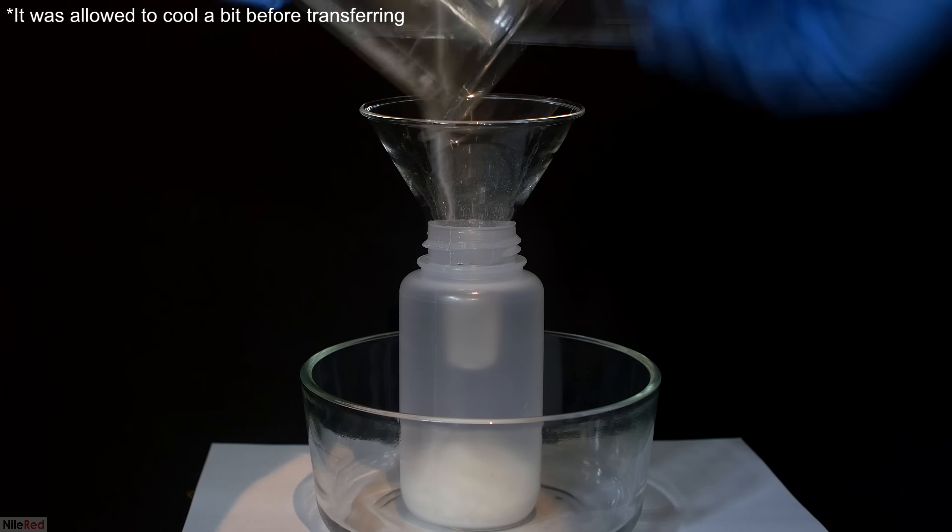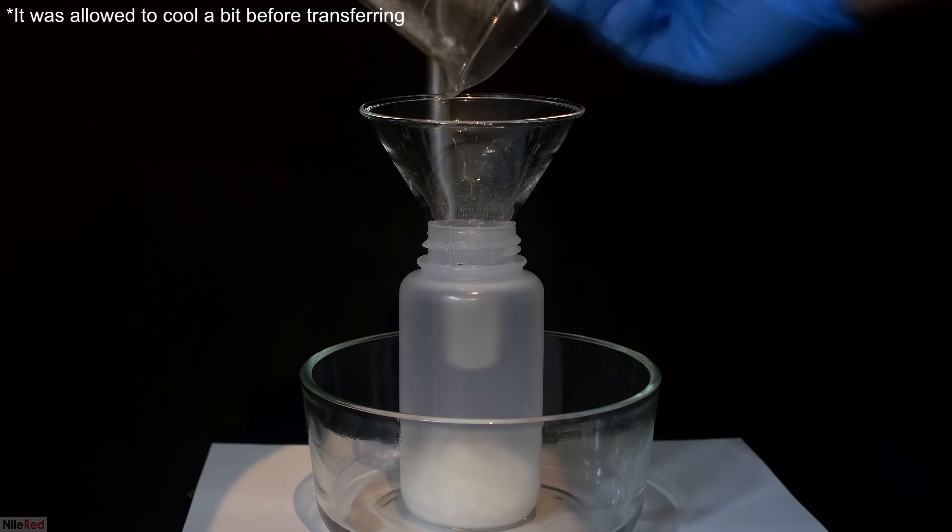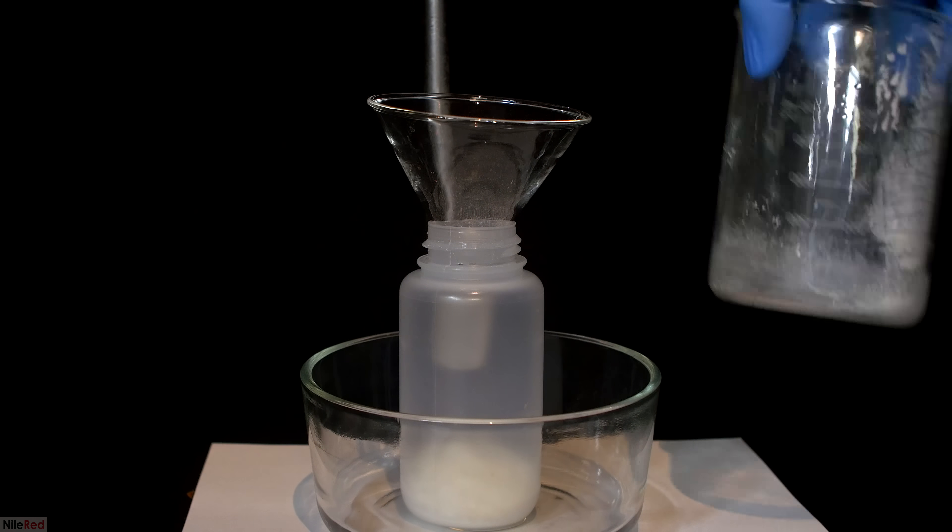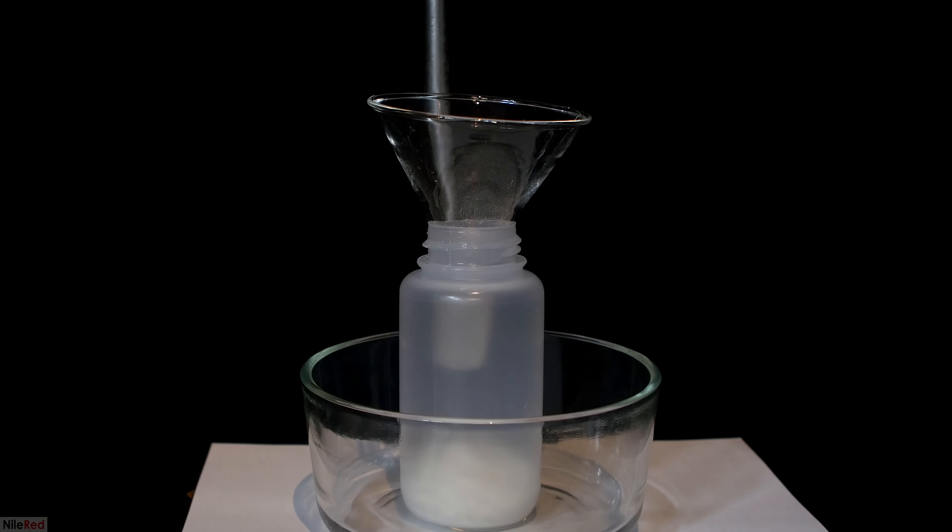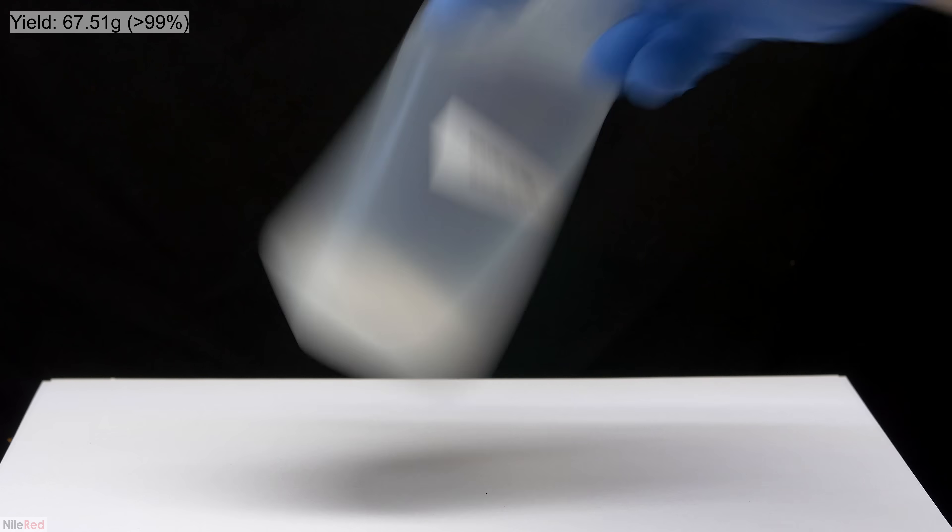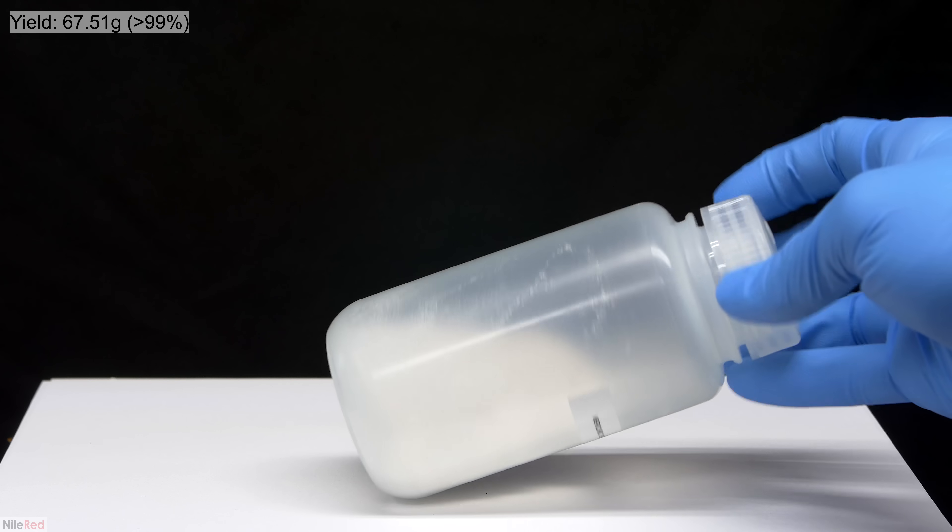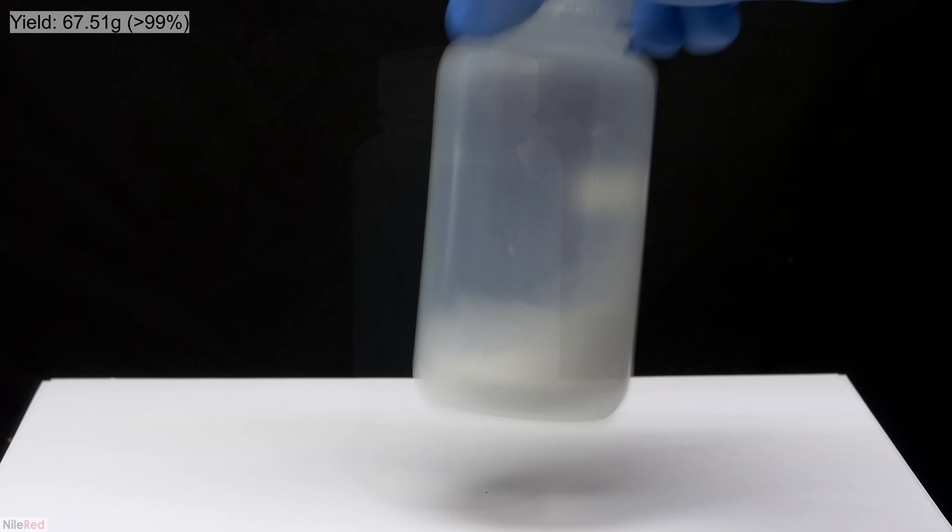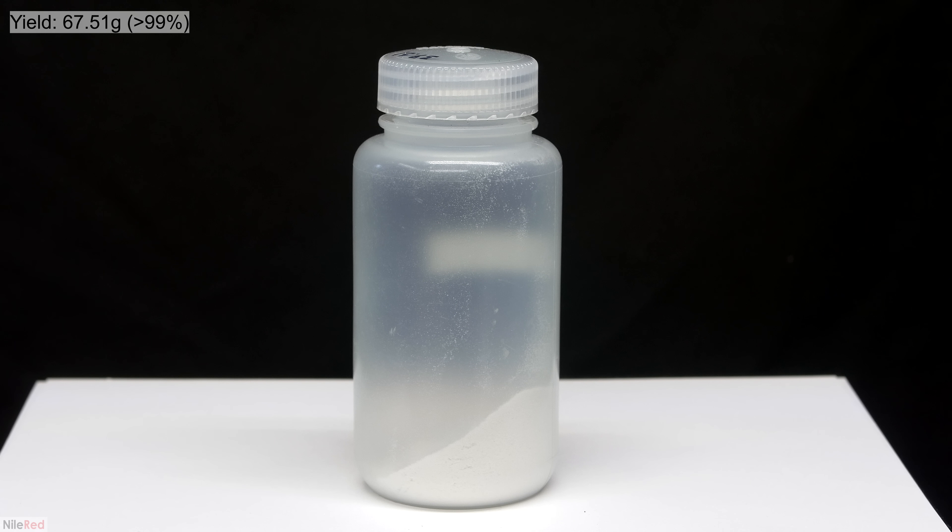I leave the mercuric chloride on heat for a little bit to fully dry it up, and then I transferred it to a bottle. The beaker still contains some mercury salt, but I decided it wasn't worth my time to try to recover it. The final yield of mercuric chloride came out to be 67.51 grams, which represents a percent yield of a little over 99%. I was very glad to get such a high yield because when you work with mercury, you really want as little waste as possible.